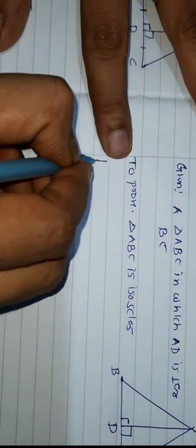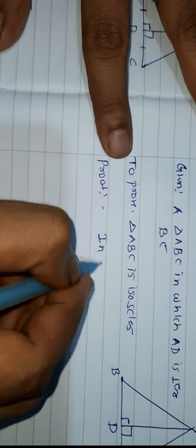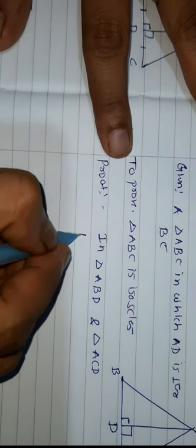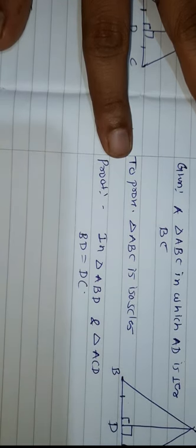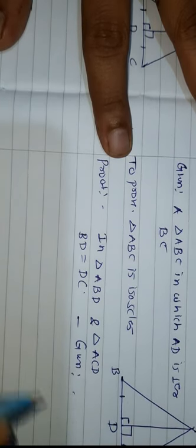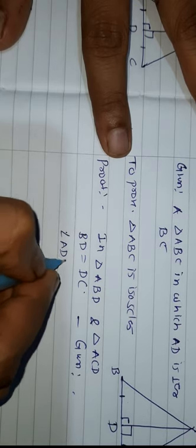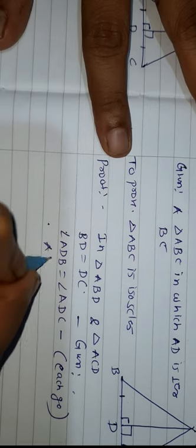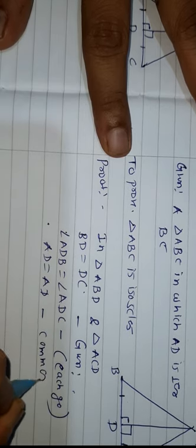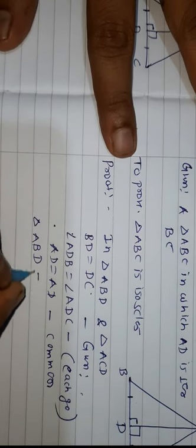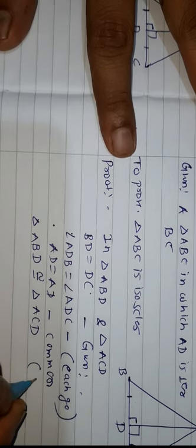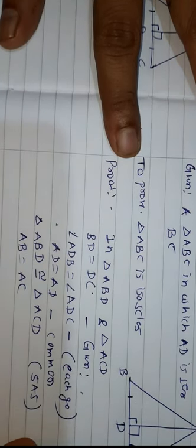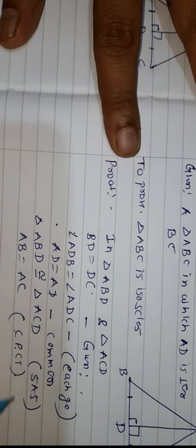In the proof, in triangle ABD and triangle ACD: BD equals DC — that is given. Second, angle ADB is equal to angle ADC, each 90 degrees. Last, AD equals AD — that is the common side. So triangle ABD is congruent to triangle ACD by SAS. Finally we can say AB equals AC by CPCT — corresponding parts of congruent triangles.